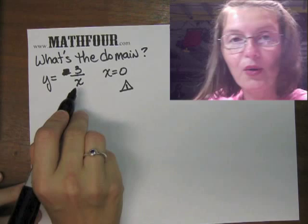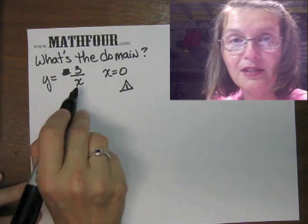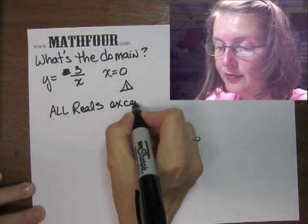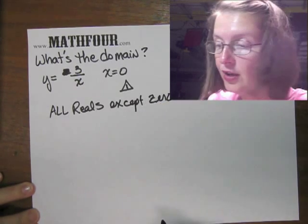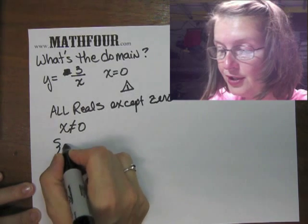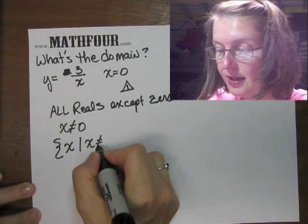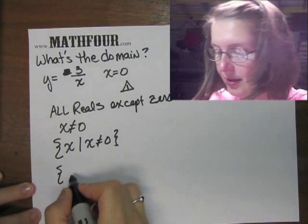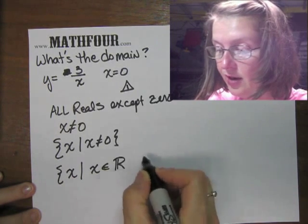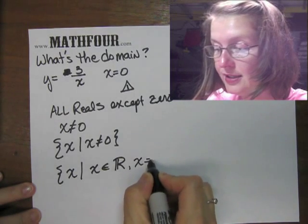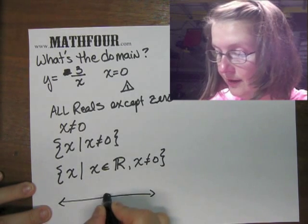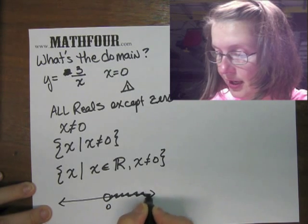So you would say anything would go into this function except 0. So we can say all reals except 0. We could also write x is not equal to 0. We can do functional notation all x such that x is not equal to 0. You can get a little fancier and do all x such that x is a real number, and x is not equal to 0. You can do a line where you have 0 here with a gap and then you shade both ways.